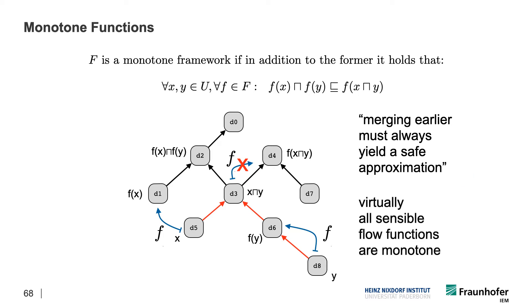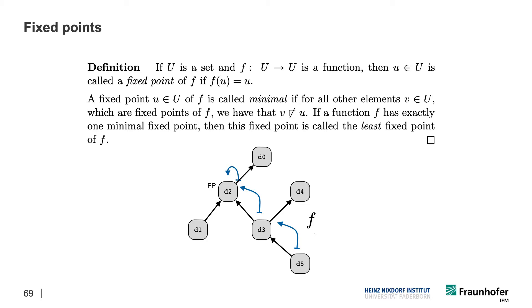You might think this is an obscure and tough restriction, but in my experience virtually all sensible flow functions are monotone. If you find yourself with a non-monotone flow function, then very likely you have a very odd design and you should rethink it. What's nice about this monotonicity property is that once you have it, you actually get the guarantee that you can always reach fixed points.